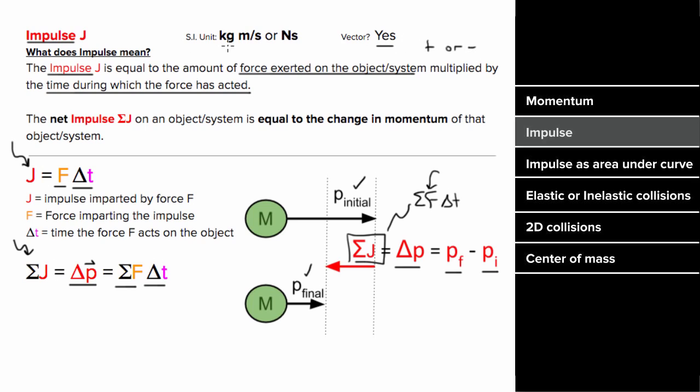And the units are the same as momentum, which is kilograms times meters per second. Or, since it's also force times time, you could write the units as newtons times seconds.